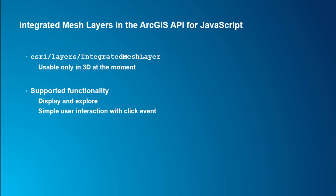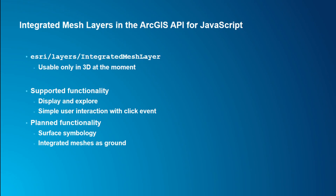For integrated mesh layers, we have a couple of things on the roadmap. We're planning to work on surface symbology — similarly to point cloud, where you can color by height, color by classification, these kinds of things. In Pro you can already do that; we just don't have support in the web platform yet. The other thing is we want to make it possible to use an integrated mesh as a ground layer, essentially replacing the terrain layer and being able to drape graphics on top of the integrated mesh and elevation-align graphics with it. This is coming sometime in the future.